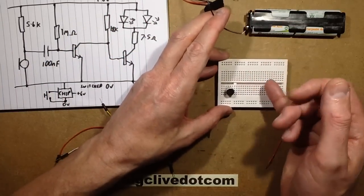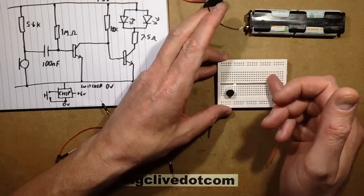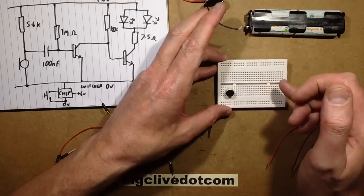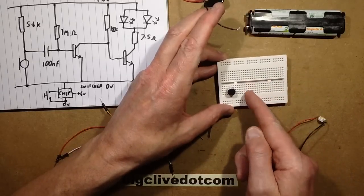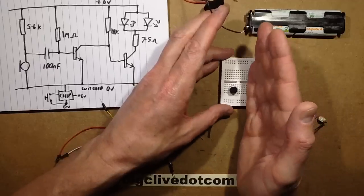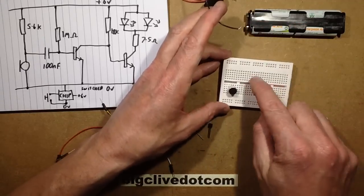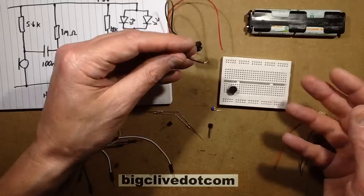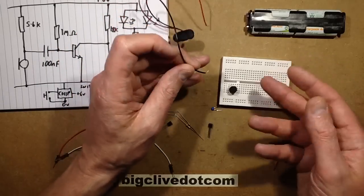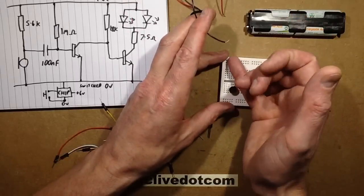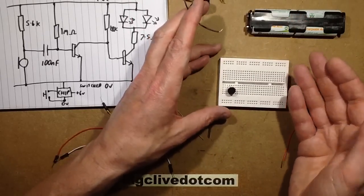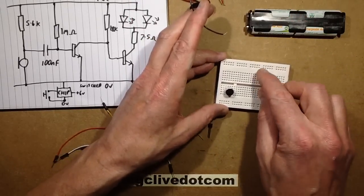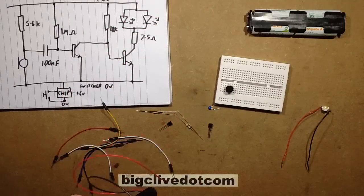In this breadboard, all these little strips of five are connected together individually in this orientation but isolated from each other in that orientation. These should hopefully be a continuous conductor. Some of the generic eBay ones have breaks in these bus bars, but they're normally marked. Some of them just don't mark them and it catches you out when that happens.